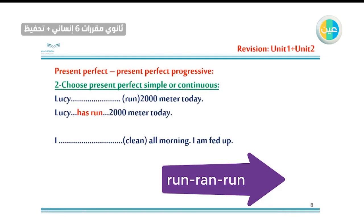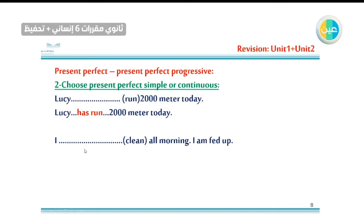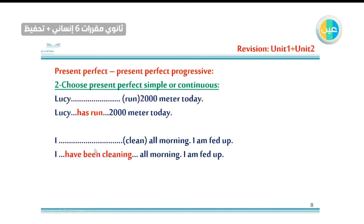Example: 'Lucy run 2000 meters today.' This is the result — present perfect. Lucy has run 2000 meters. Run, run, run — past participle. Next: 'I clean all morning. I am fed up.' Here we are talking about duration — all morning. The rule for present perfect progressive: subject + has/have + been + verb with -ING. I have been cleaning all morning.